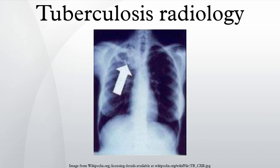Old-healed tuberculosis usually presents as pulmonary nodules in the hilar area or upper lobes, with or without fibrotic scars and volume loss. Bronchiectasis and pleural scarring may be present. Nodules and fibrotic scars may contain slowly multiplying tubercle bacilli with the potential for future progression to active tuberculosis.